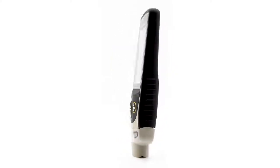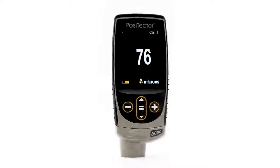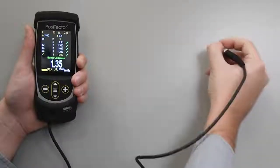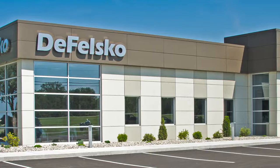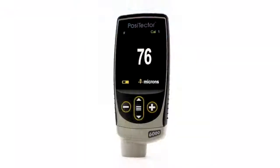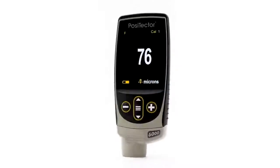The PosiTector 6000 coating thickness gauge for all metals is the simple, durable, and accurate solution for DFT measurement. Backed by DeFelsko's renowned quality, customer service, and exceptional two-year warranty, the PosiTector 6000 is the ideal choice for coating thickness measurement.